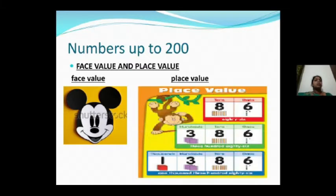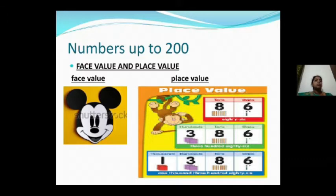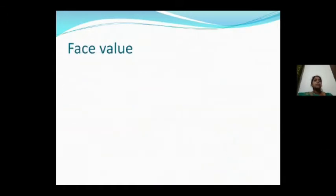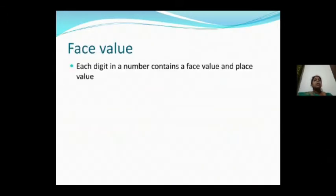Like that, place value — I already explained in your previous class. See 86: 8 is in the tens place, 6 is in the ones place. In 386: 6 is in ones place, 8 is in tens, 3 is in hundreds. In 1386: 1 is in thousands place, 3 is in hundreds, 8 is in tens, 6 is in ones place.